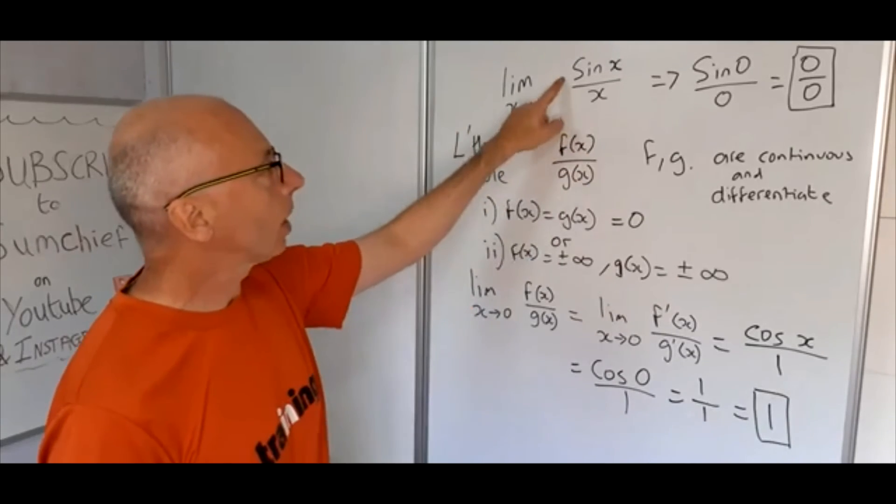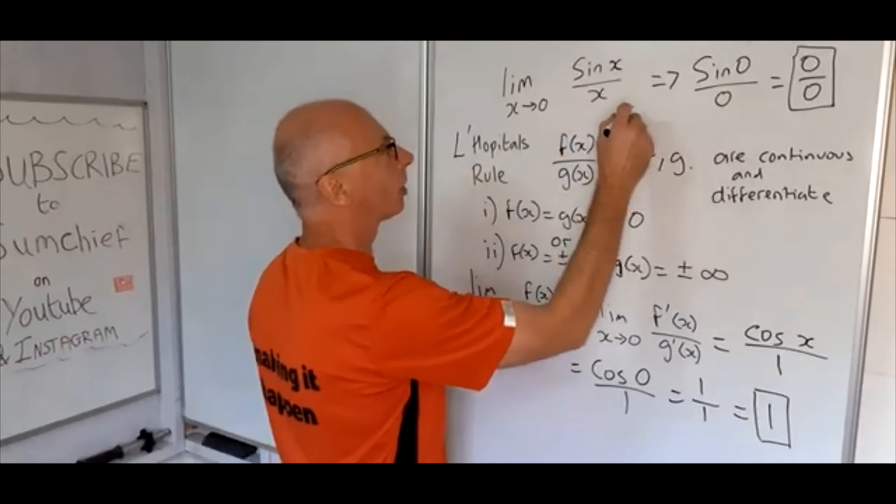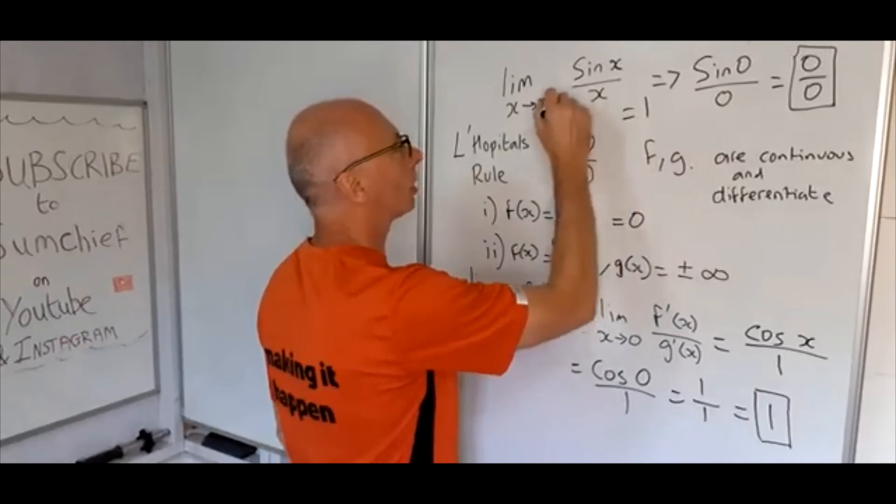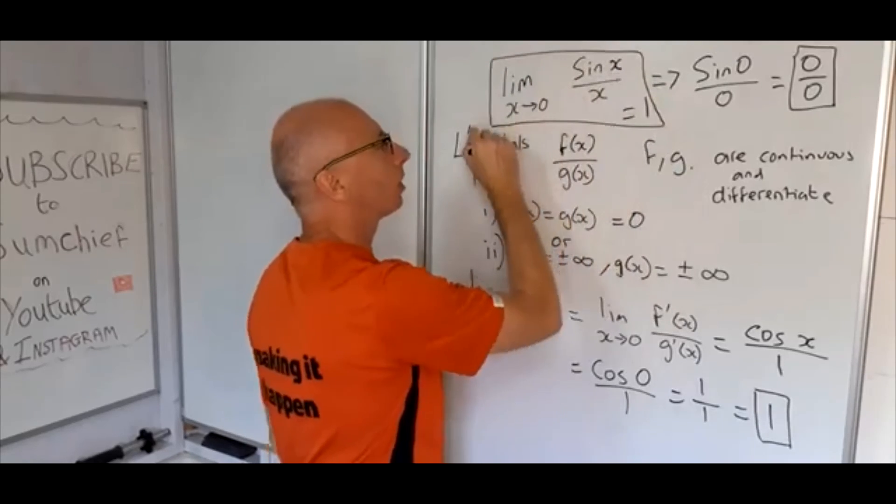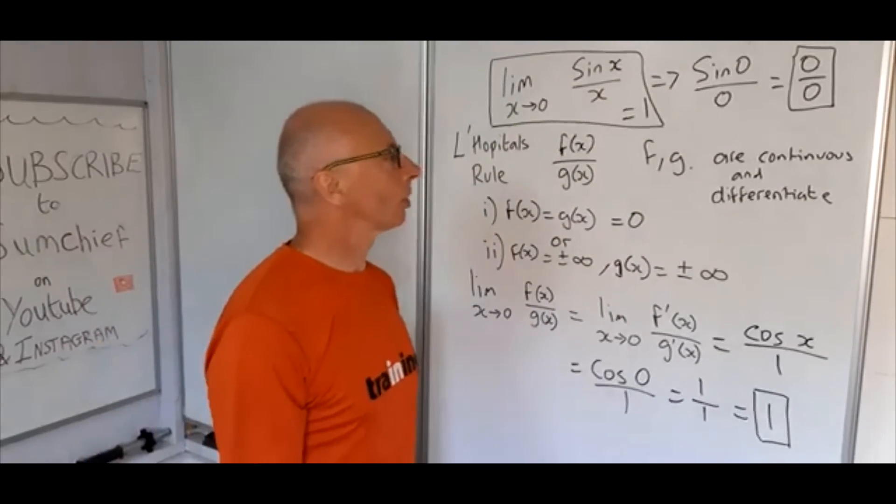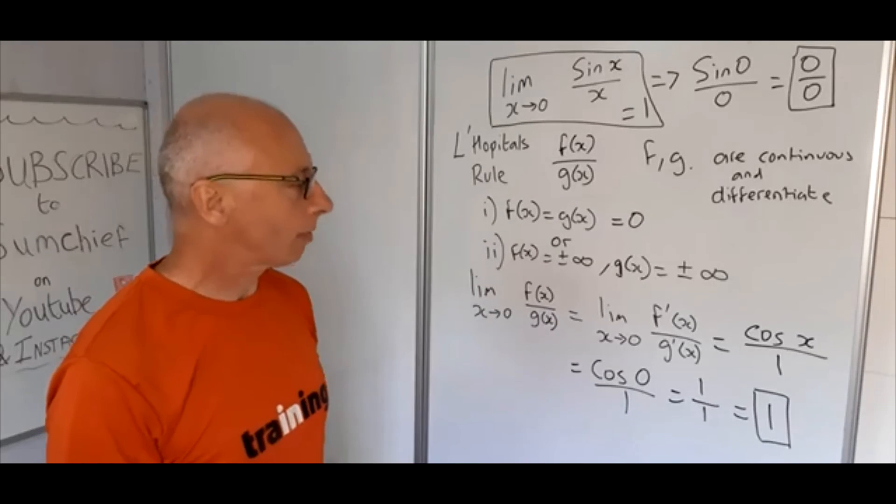So therefore the limit of sine of x over x equals one. Okay, and that's the answer. This is a very famous function, because it's been very useful in a lot of advanced mathematics.